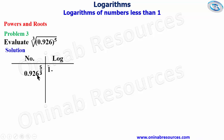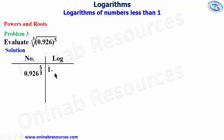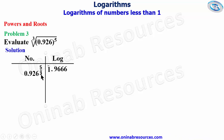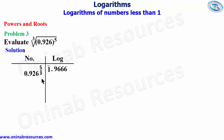The integer part of the logarithm of 0.926 is bar 1. We place our point, look for 92 under 6 with no difference from the logarithm table, and get 9666. The fractional index is 5 over 3, which means we multiply by 5 and divide by 3. Following order of operations, we divide by 3 first.